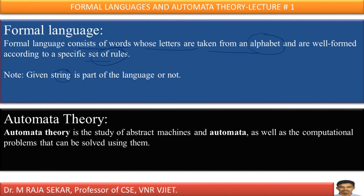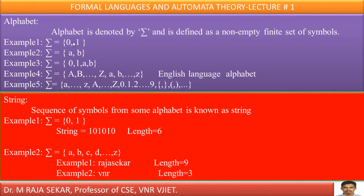Automata theory is the study of abstract machines. Abstract machine in the sense — here, machine means computer. Abstract machine means abstract computer, which is a theoretical model of a real computer. Automata theory is useful in understanding theoretical computers, theoretical models of a computer, or abstract machines. It helps us understand which type of problems a machine can solve or cannot solve.